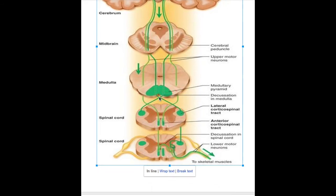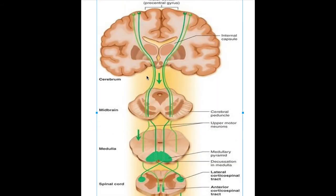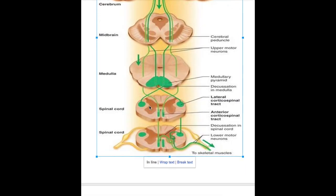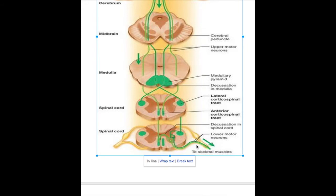Any lesion below the level of the pyramidal decussation produces an ipsilateral lesion. In contrast, the anterior corticospinal tract does not decussate in the medulla — it travels ipsilaterally and then crosses over within the spinal cord, supplying muscles on the opposite side.